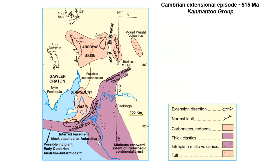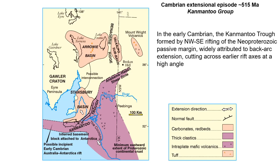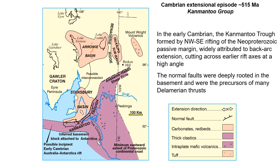Something completely different happened in the Cambrian, with a new extensional episode that postdates the formation of the passive margin — the development of the Kangaroo-2 Trough. This is widely believed to have occurred by back-arc extension, and it cuts right across the earlier rift axes at a high angle. The normal faults were deeply rooted in the basement and were the precursors of many of the Delamerian thrust faults we see in the Mount Lofty Ranges.